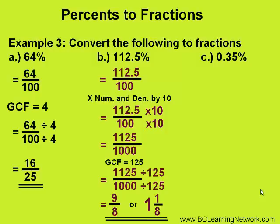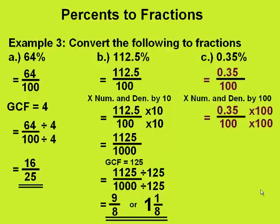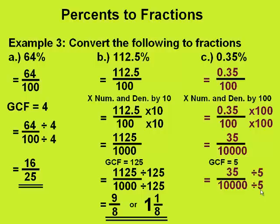Let's do our last one: 0.35%. Converting this to a fraction, we write 0.35 over 100. Again, we want to eliminate the decimal in the numerator. In this case, we have to move the decimal two places to the right, so we need to multiply the numerator and denominator by 100, giving us 35 over 10,000. We find the greatest common factor, which is 5, and divide the numerator and denominator both by 5, leaving us with a reduced fraction of 7 over 2,000.